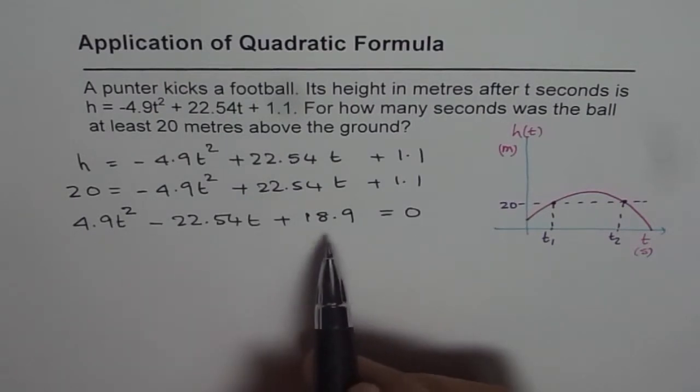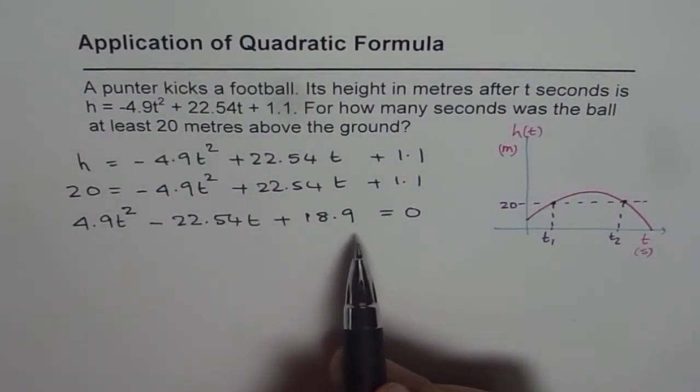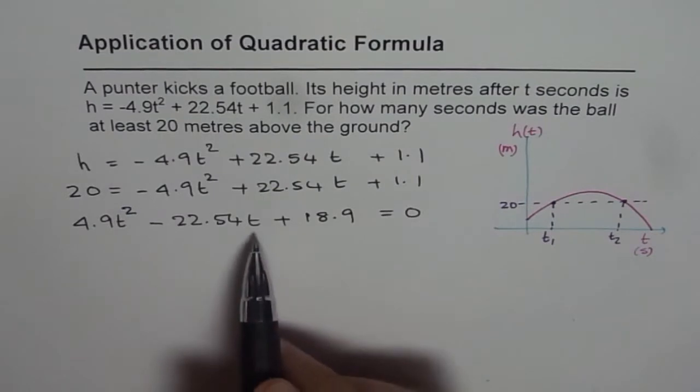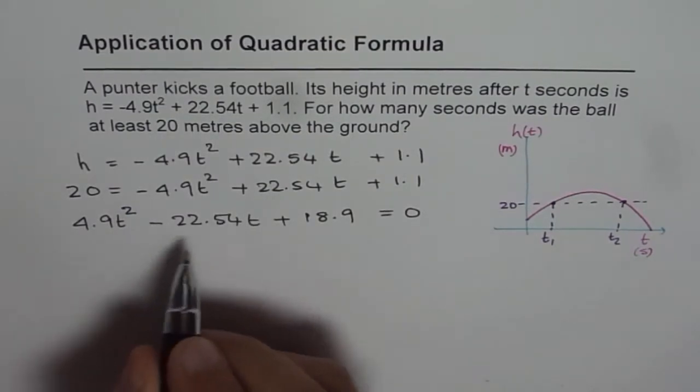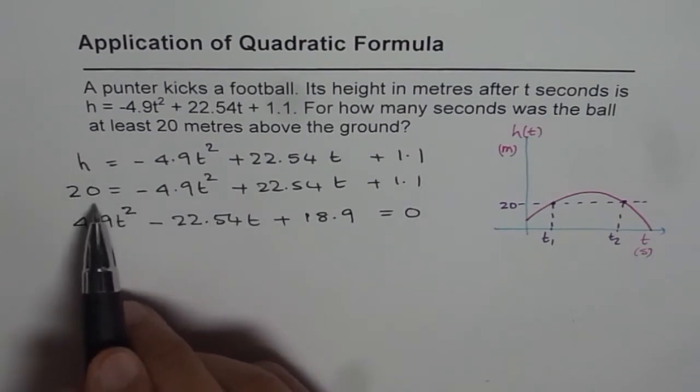Now since there are so many decimal places, it is kind of difficult to factor. So best thing is to find time now, use quadratic formula. So let us use quadratic formula to find time when the height is 20.